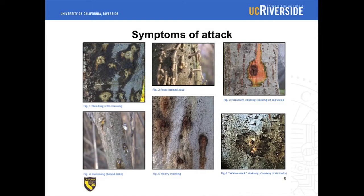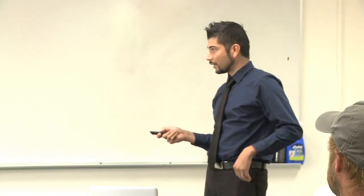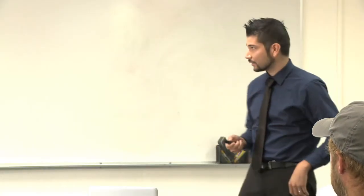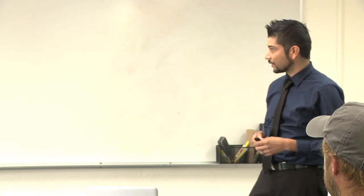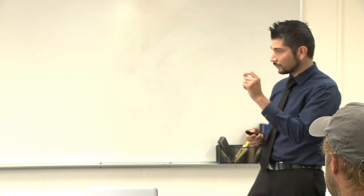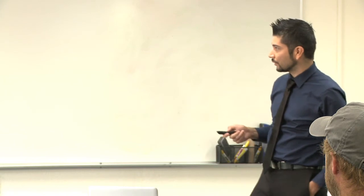Some of the symptoms of attack: obviously you're going to see an entry hole where the female beetle has gone in. You're going to get a range across different hosts because they attack a wide host range. You're going to get some sort of sapping from the tree. It can be more runny, like in sycamore where we see more staining. But in other species like persimmon, they'll have more of a gumming symptom — more of a viscous material that comes out of the tree. It really depends on the host, but you're looking for those symptoms and evidence of a beetle attack.